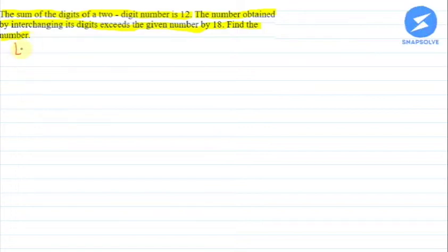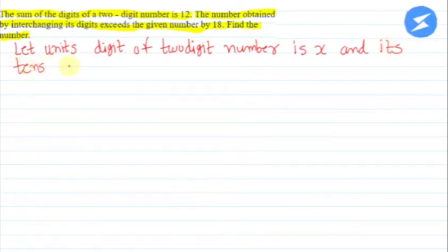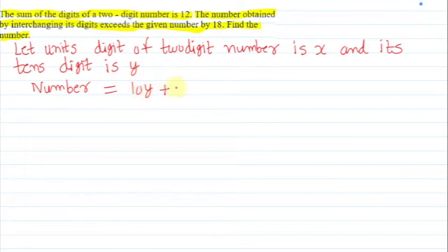Let the units digit of the two-digit number be x and its tens digit be y. So the number will be: tens digit y has place value 10, giving 10y, plus units digit x, so the number equals 10y plus x.